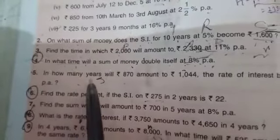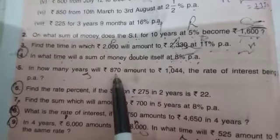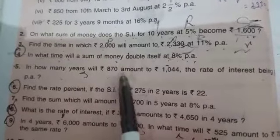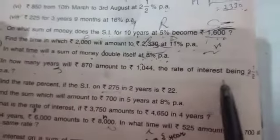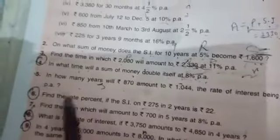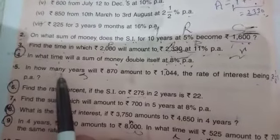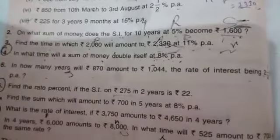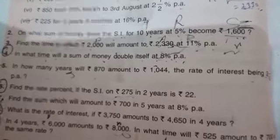In how many years? Means what we have to find? Time. Will rupees 870 amount to 1044? The rate of interest being 2 whole 1 by 2 percent per annum. What is given to us? Firstly, what we have to find? That is time. So according to statement, whatever is given, we will write it side by side.